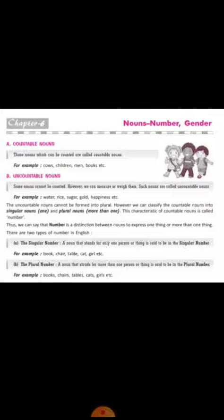The characteristic of countable nouns is called number. Jab hum countable nouns ko characterize karte hain, alag-alag type mein usko define karte hain, kinds mein, they are called numbers. We can say number is a distinction between nouns to express one thing or more than one thing.